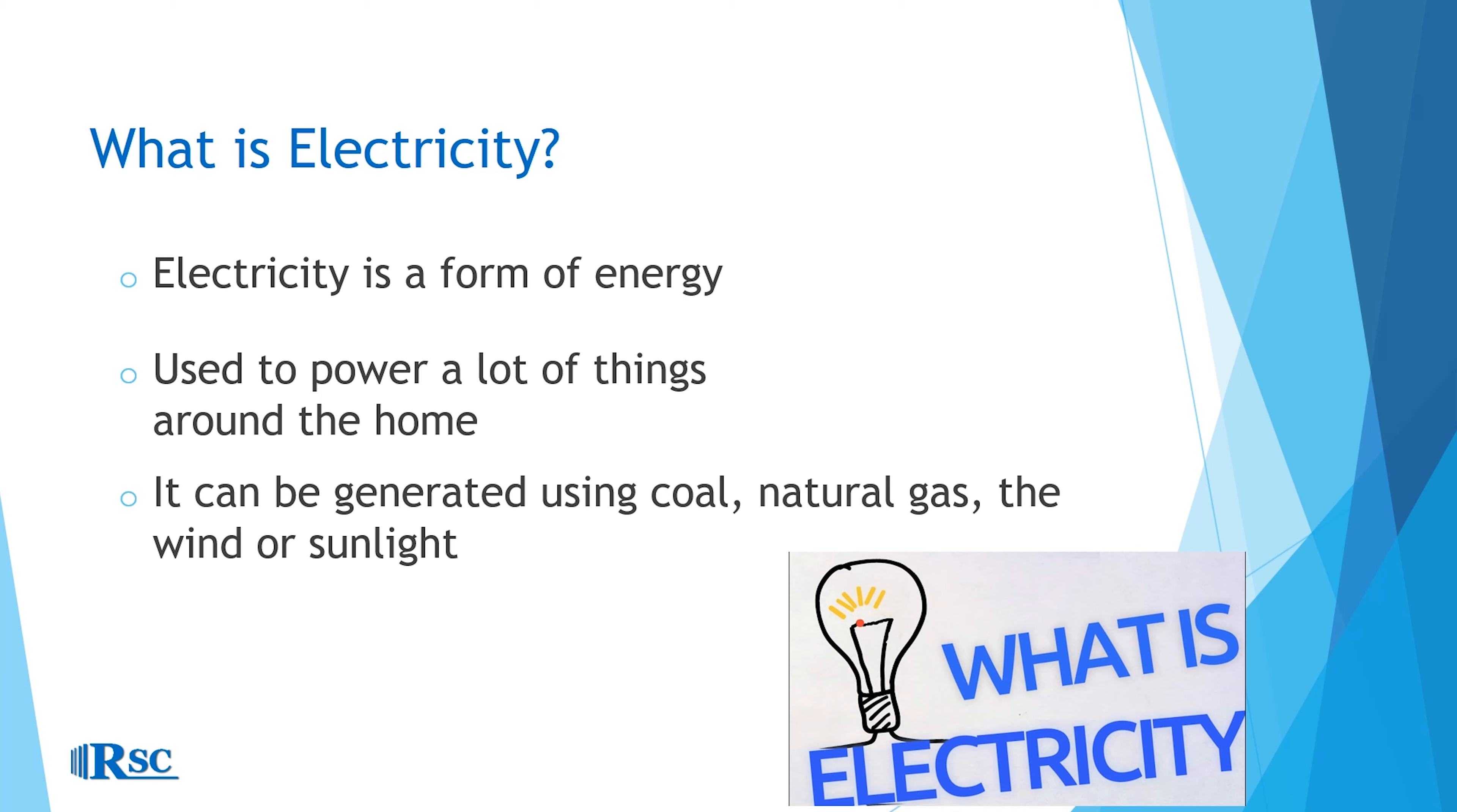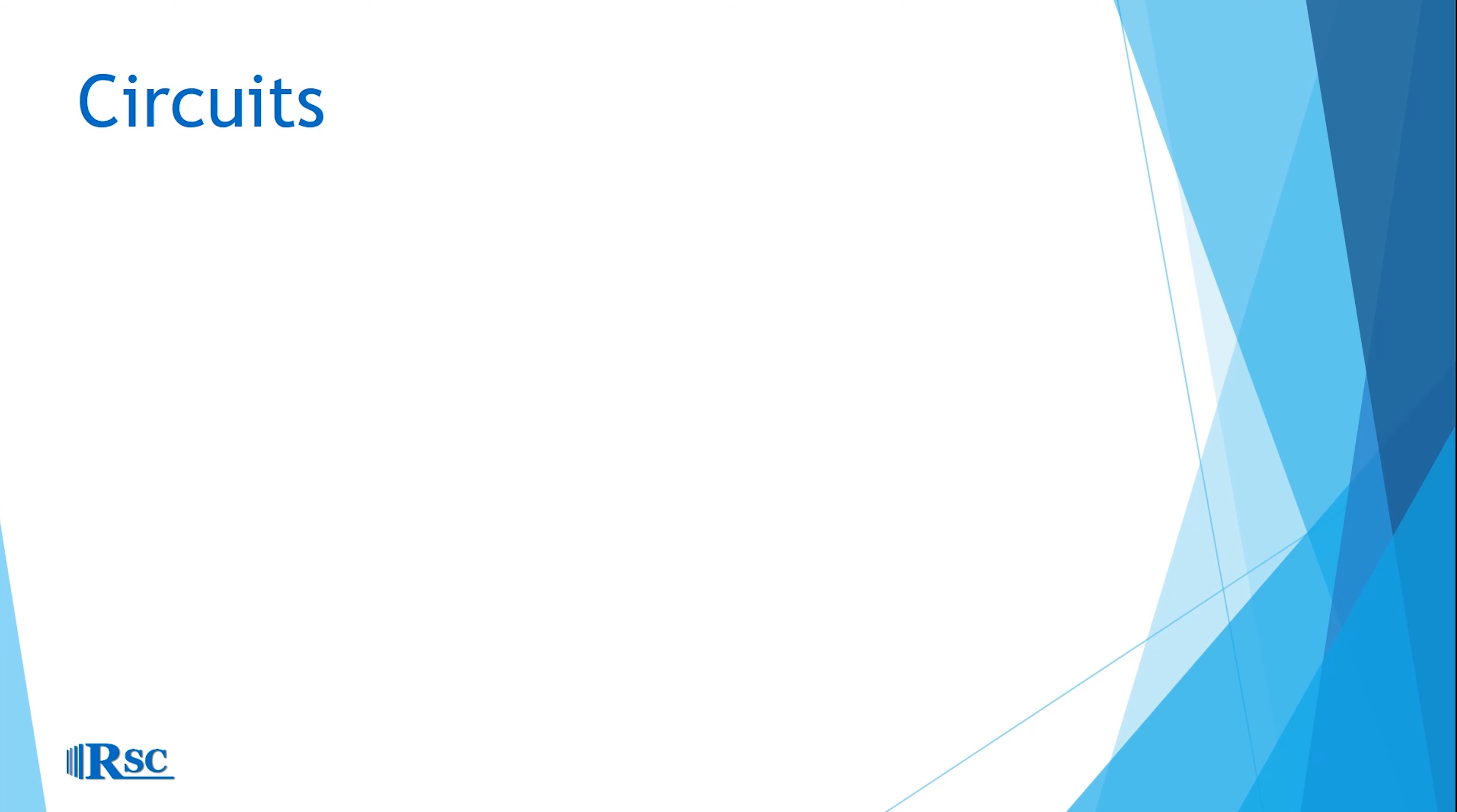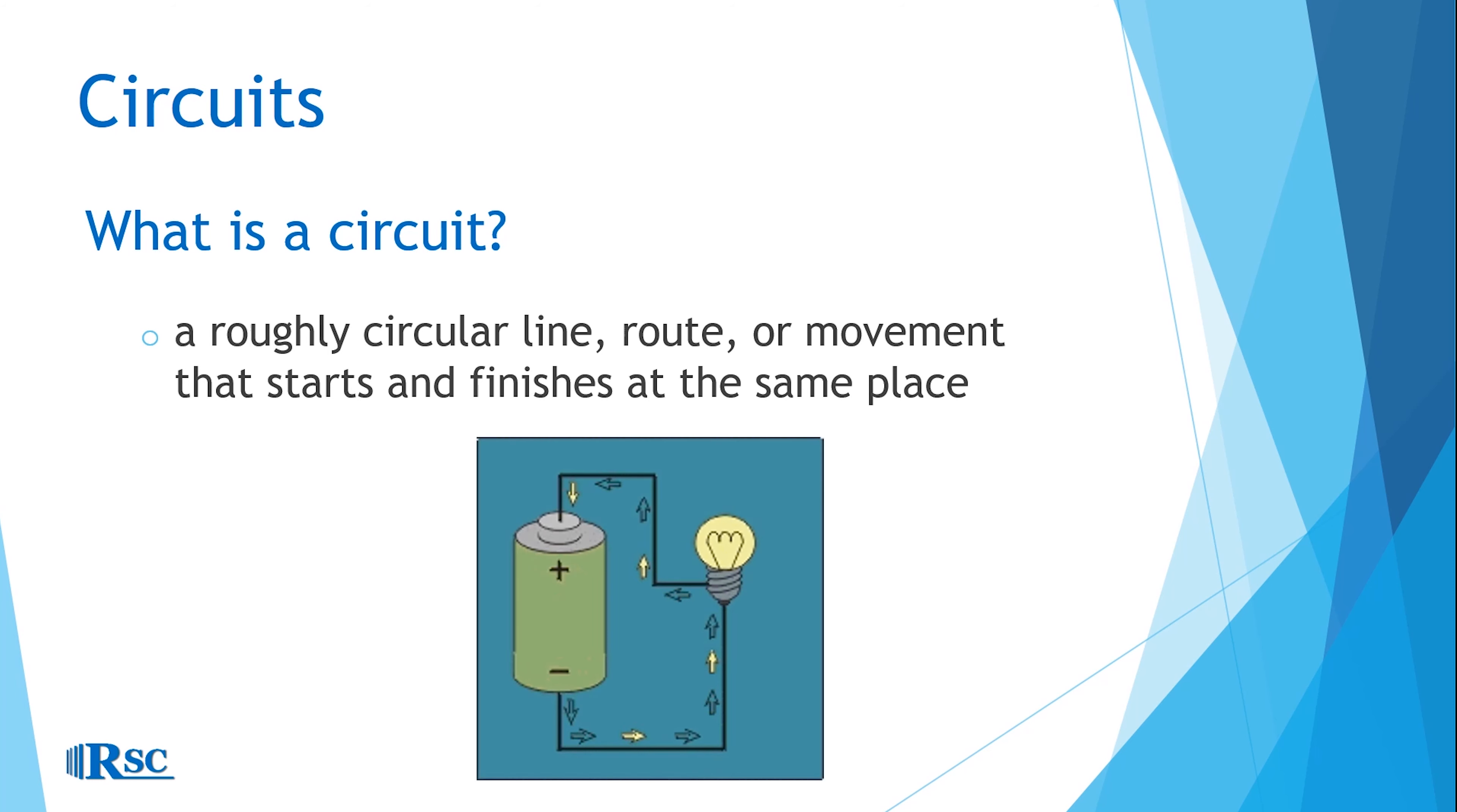It only flows in circuits. So, what's a circuit? It is a roughly circular line, route, or movement that starts and finishes at the same place. From the diagram, you can see an example of this.